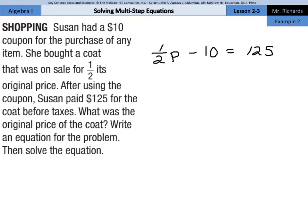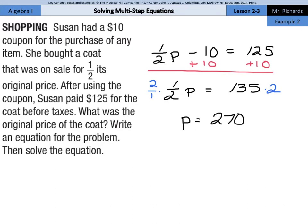And now we get to solve this. Add 10 to both sides. We're left with one half p equals 135. And with this fraction, if we multiply by the reciprocal, which is 2 over 1, p is going to equal $270. So the original price was $270.